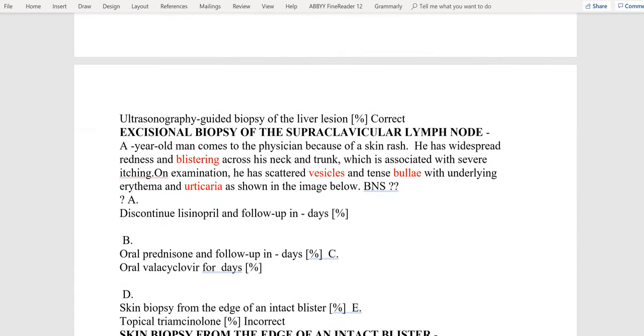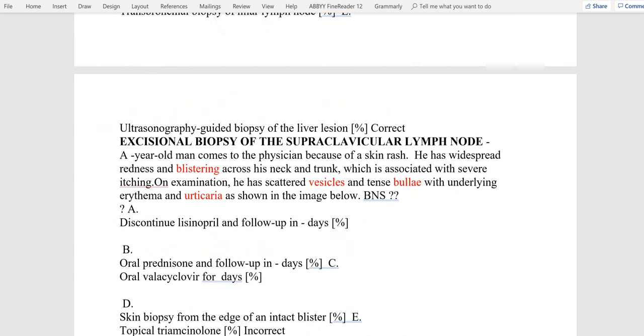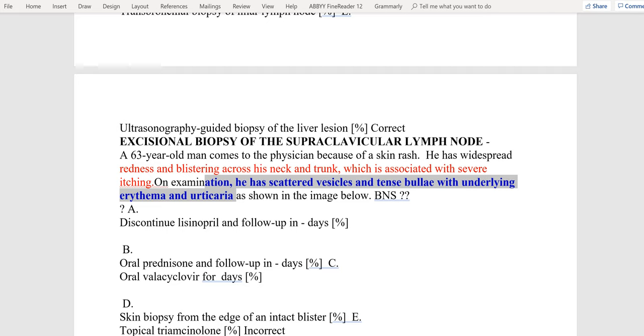This is a 63-year-old man who presented with widespread redness and blisters according to the back and neck and severe itching. On examination there are vesicles and tense bullae underlying erythema and urticaria. This patient has pemphigus vulgaris, so we do skin biopsy from the edge of an intact blister.